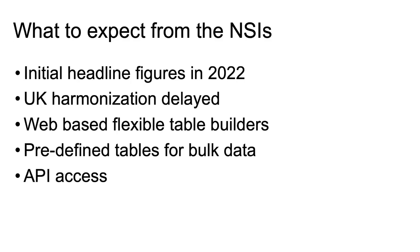Those initial outputs will be headline figures, and then we'll start to see outputs appearing slowly over the two years after that. Both ONS and NISRA have committed to a flexible dissemination system that will allow users to create their own outputs by choosing variables and geographies to suit their needs. This will incorporate a form of dynamic disclosure control to protect data confidentiality — possibly a mix of data blurring, record swapping, or data withholding.